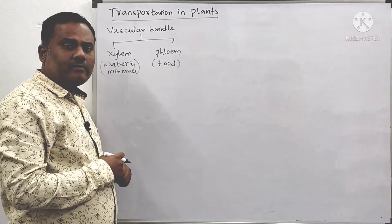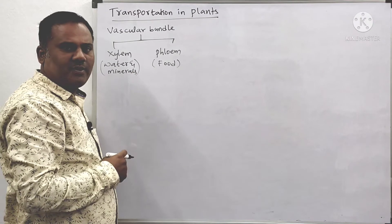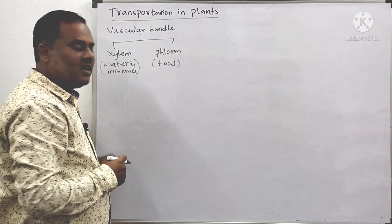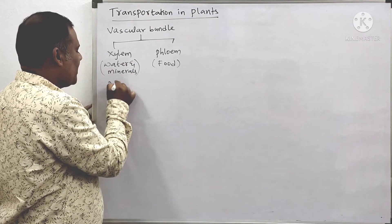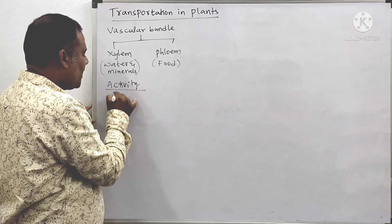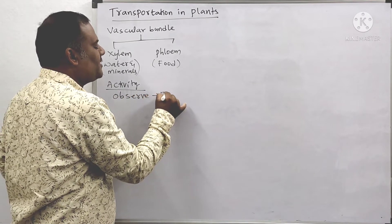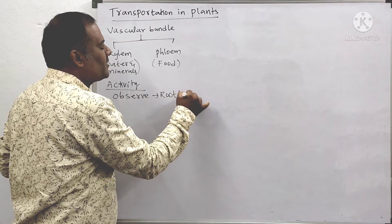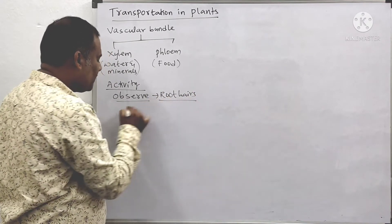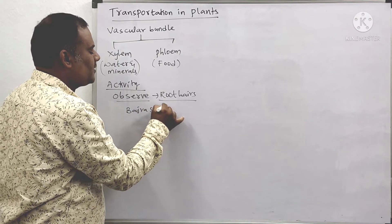Before going to know how xylem and phloem are useful in transporting water and food materials, first we know a small activity. With the help of that activity, we are able to observe root hairs. You take bajra seeds and allow them to germinate.